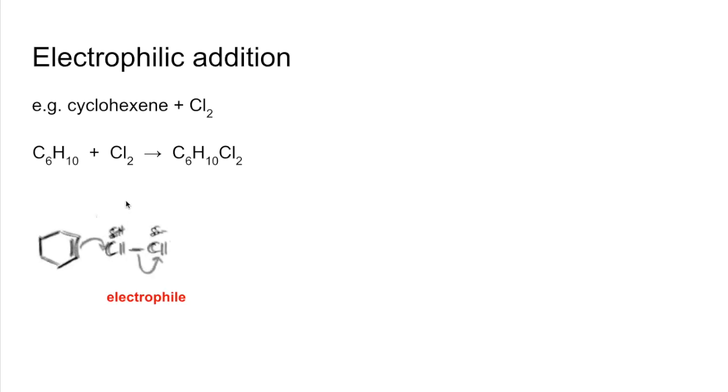So we show that like this. So a pair of electrons from the double bond attracted to this chlorine and then the pair of electrons in this bond are going to be completely repelled onto that chlorine and break the bond. And this time we get heterolytic fission. That's because the chlorine, this one here, gets both of the electrons from the bond.